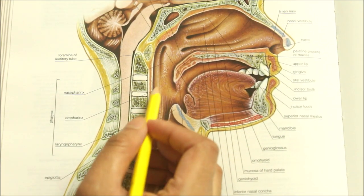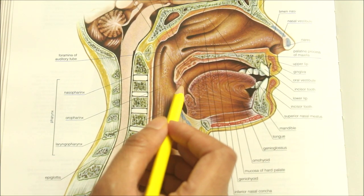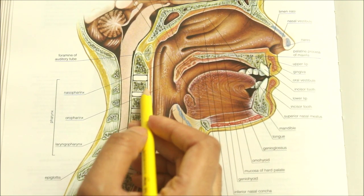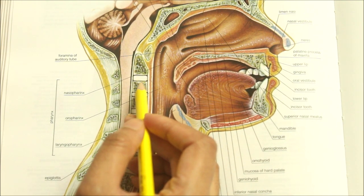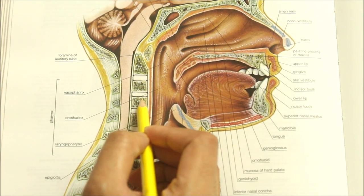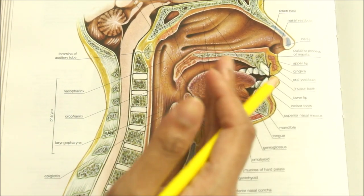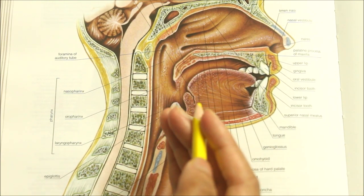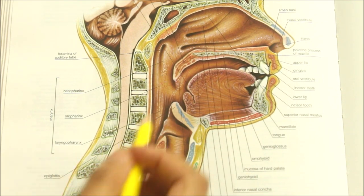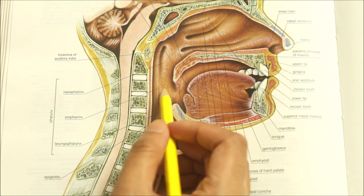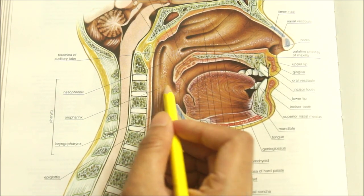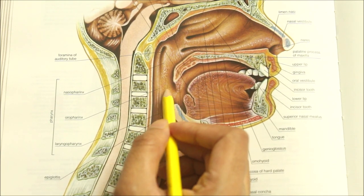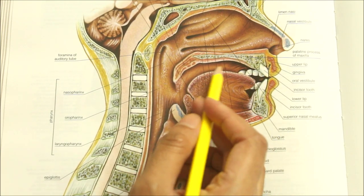Looking at the relations of the oropharynx: anteriorly it is related to the oral cavity; posteriorly it is related to the body of the second and third cervical vertebra; and the lateral wall is related to the tonsillar fossa containing the palatine tonsils. The oropharynx is lined by stratified squamous non-keratinized epithelium, and its function is passage for air and food.